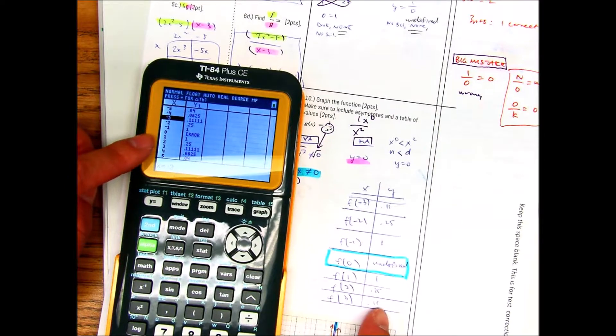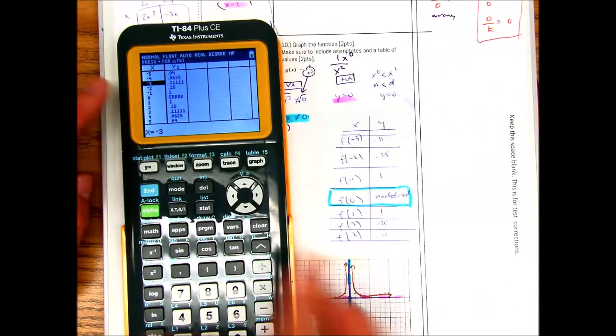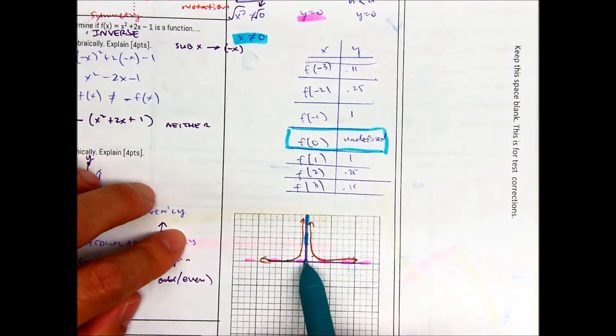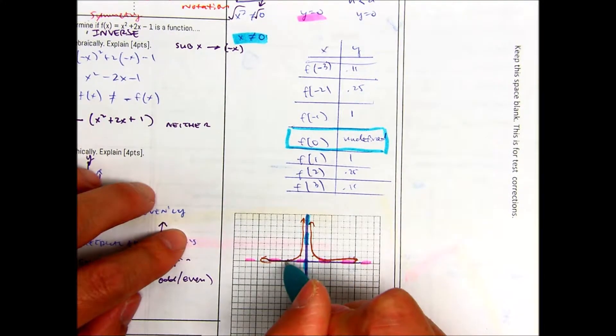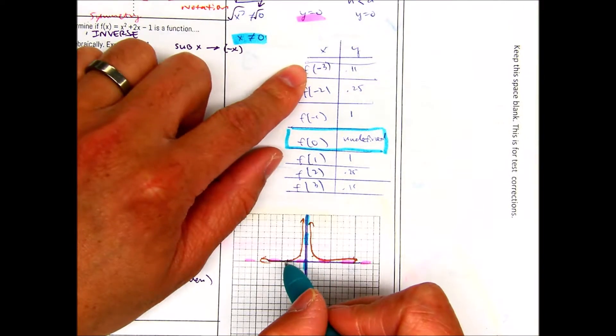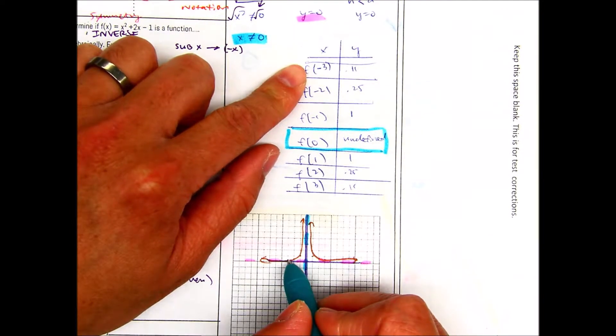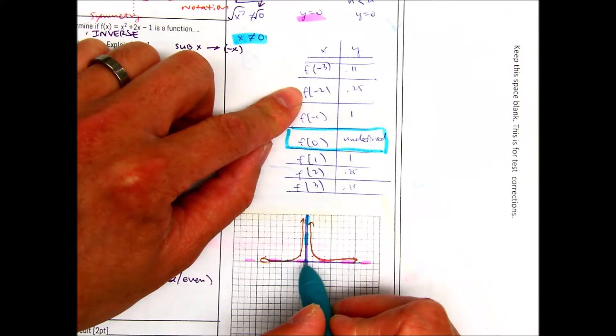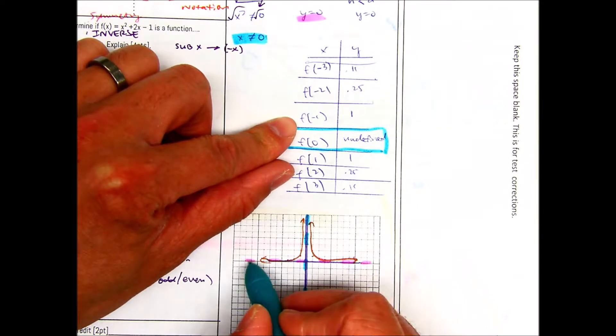And then based off of that, you just go ahead and graph it. Negative 3, 0.11 is very close to like 0, so it's very close there. Negative 2 is like 0.25, so a little bit bigger, right? Negative 1, you've got a dollar. And then you can just make your smooth curve for your rational function. And do the same thing on the other side.